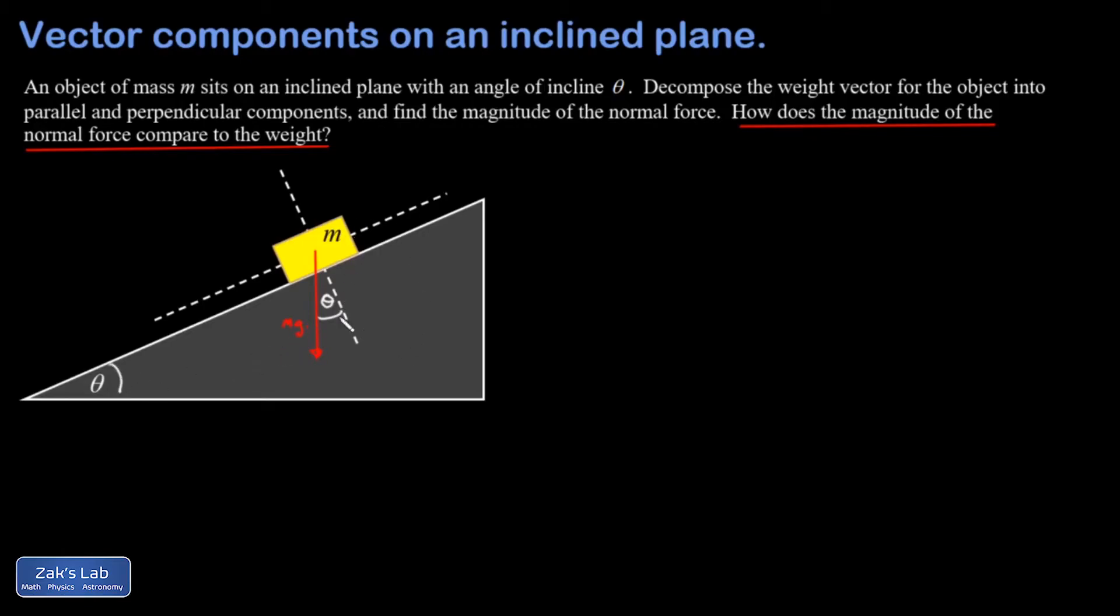Now that we've figured that out, we can quickly write down the magnitude of the adjacent side of this right triangle—that's our perpendicular piece, which is mg cosine theta. The adjacent side is given by the hypotenuse times the cosine of the angle. The magnitude of the opposite side is given by mg sine theta.